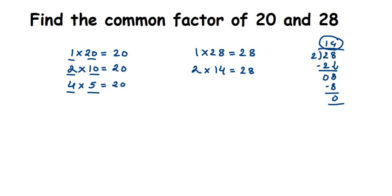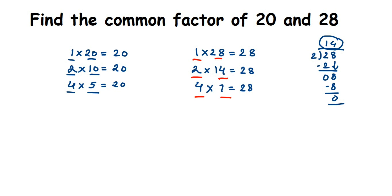Next, 3 — 28 doesn't go in the 3 table. It goes in the 4 table: 4 × 7 = 28. Next, 5 — 28 doesn't go in the 5 or 6 table. It goes in the 7 table, but since we already wrote 4 × 7, we don't need to write 7 again — it's the same. 8, 9, and 10 don't work. So the factors of 28 are: 1, 2, 4, 7, 14, and 28.